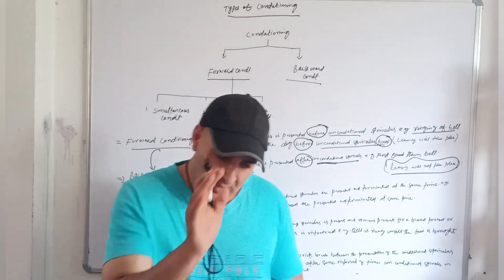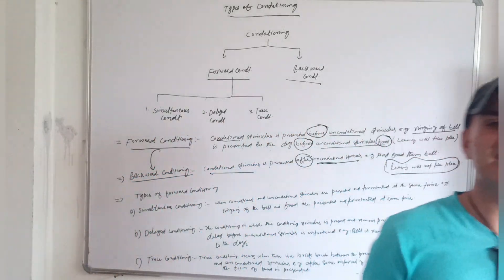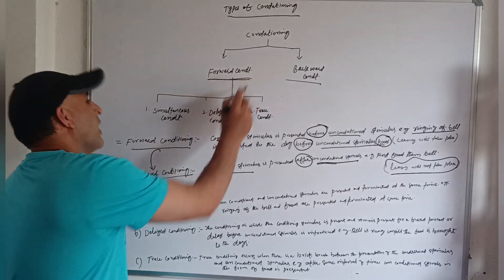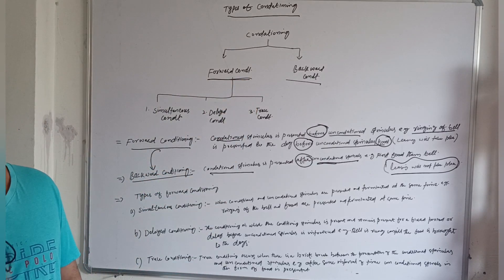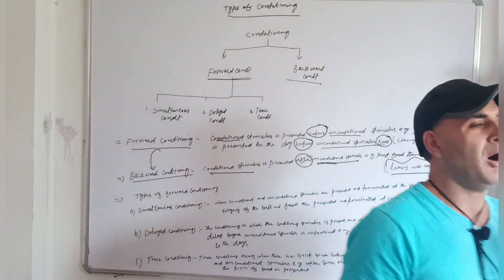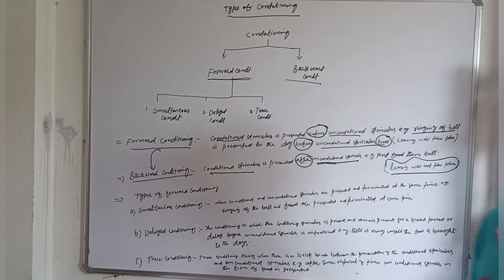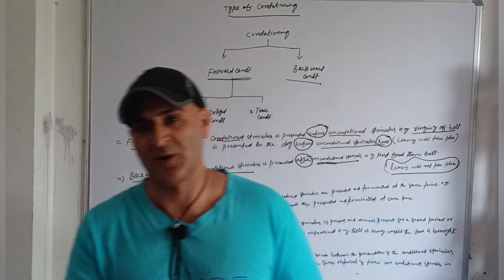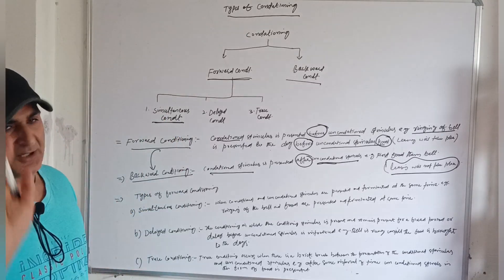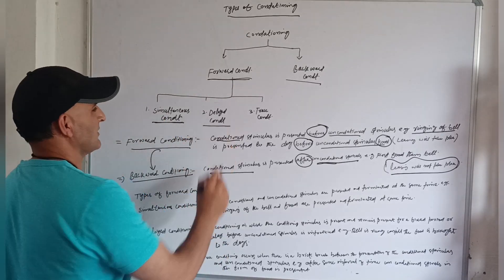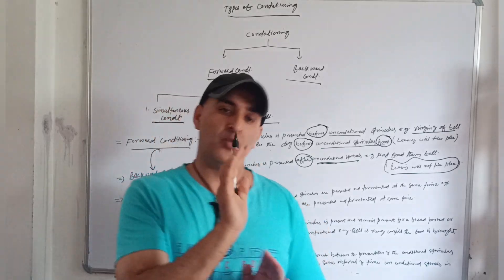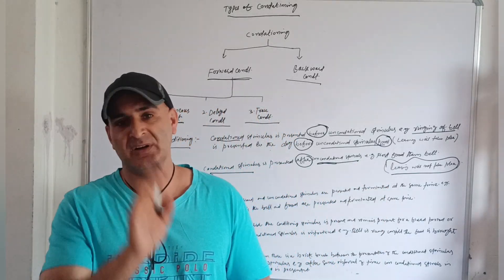Now dear students, we will discuss the various types of forward conditioning. Keeping in view the mechanism of forward conditioning, it has three main important types: Number 1, Simultaneous Conditioning; Number 2, Delayed Conditioning; Number 3, Trace Conditioning. Now we will discuss each one by one.